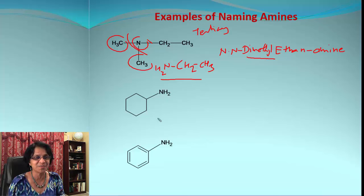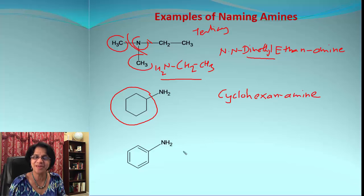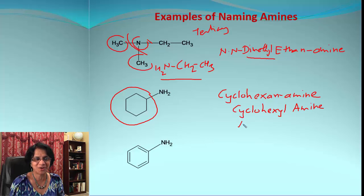How about the next one? It's a cyclic compound, that is cyclohexane, and that is of course the amino group, so it will be cyclohexanamine. We can also call this as cyclohexylamine or we can call this as aminocyclohexane.